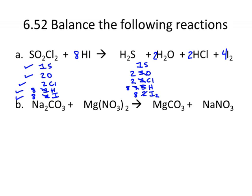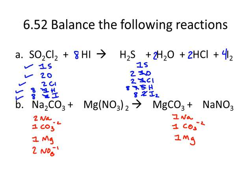In the next reaction, I have two sodiums. I see carbonates and nitrates on both sides of the chemical reaction, so I'm going to balance those polyatomic ions as a unit because they remain unchanged. I have one carbonate, one magnesium, and two nitrates on the reactant side. On the product side: one sodium, one carbonate, one magnesium, and one nitrate. It looks like I need to put a two in front of the sodium nitrate — that changes my sodium to two and my nitrate to two, and everybody's balanced.